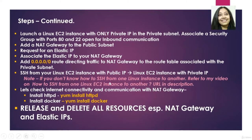The next set of steps covers provisioning the EC2 instance in a private subnet, adding a NAT gateway, requesting an elastic IP for the NAT gateway, and then SSH-ing from our public EC2 instance to our private EC2 instance. If you don't know how to SSH from one Linux EC2 instance to another, please refer to my video on that topic — the URL will be in the description.